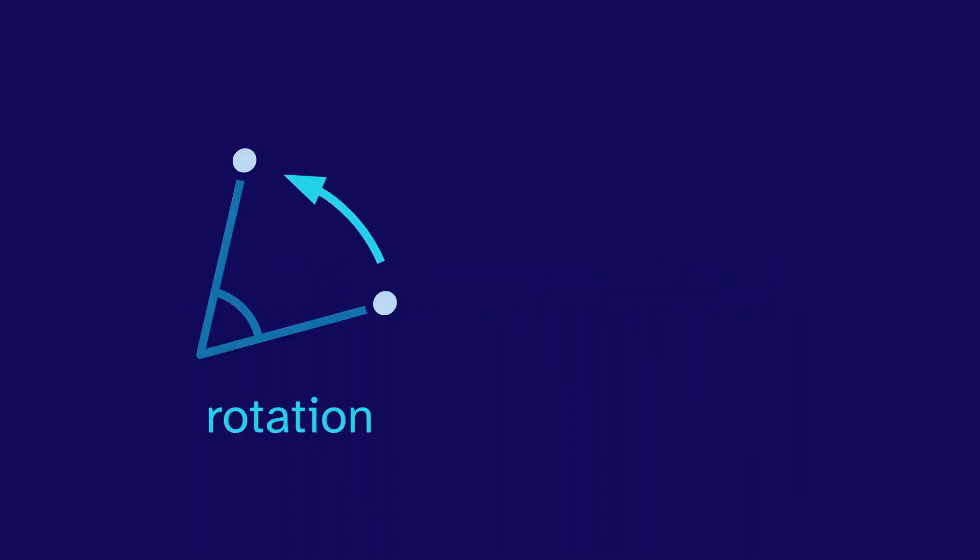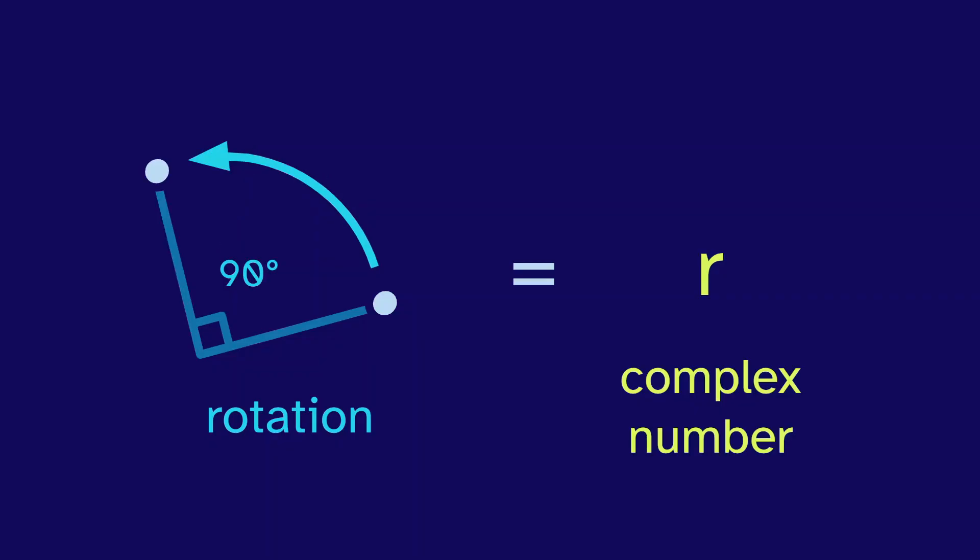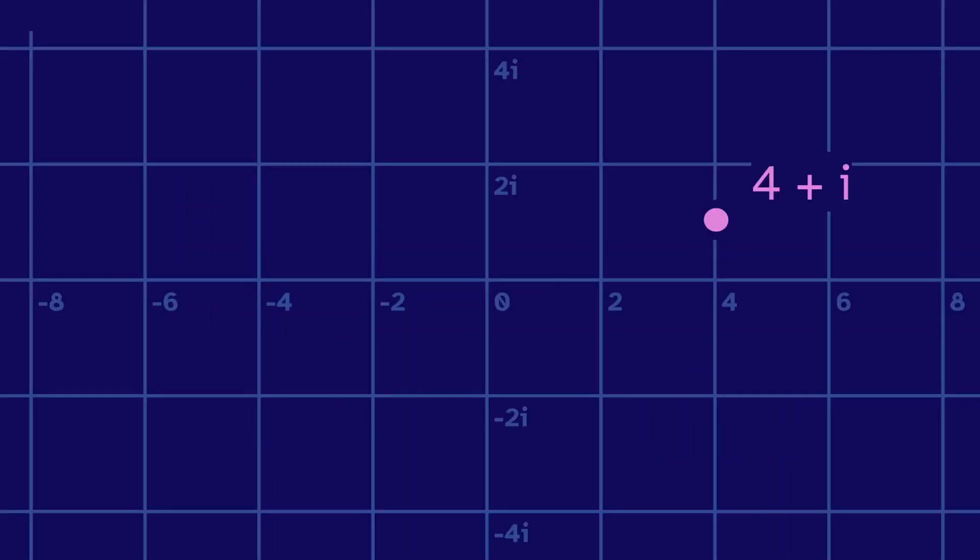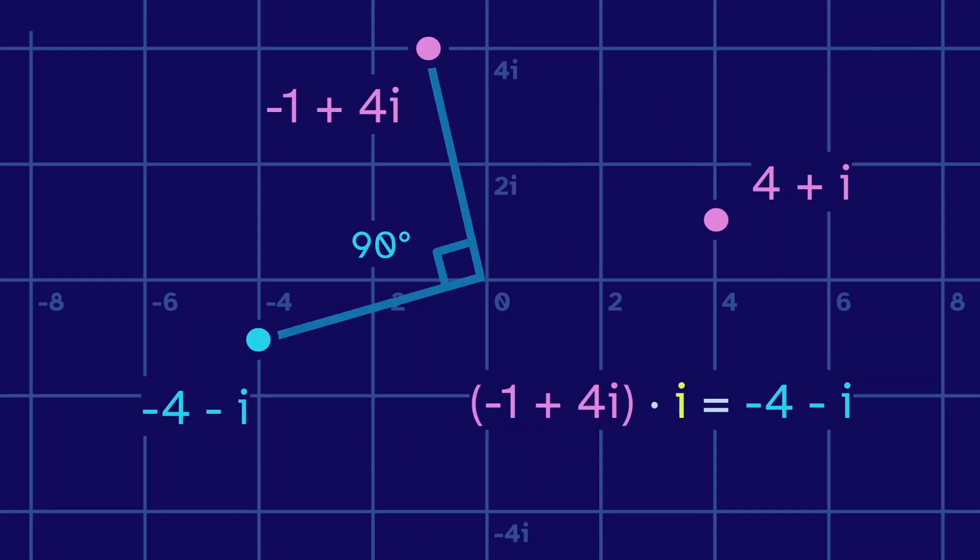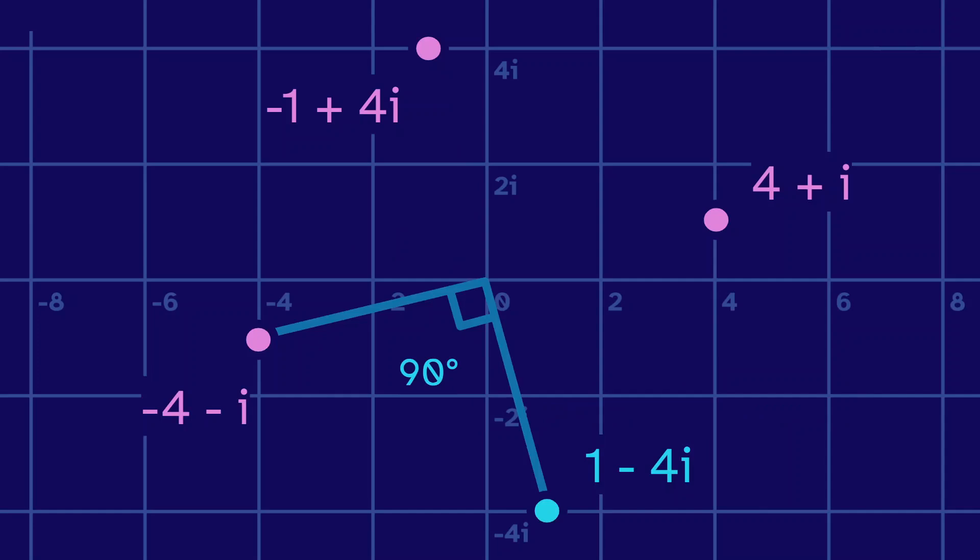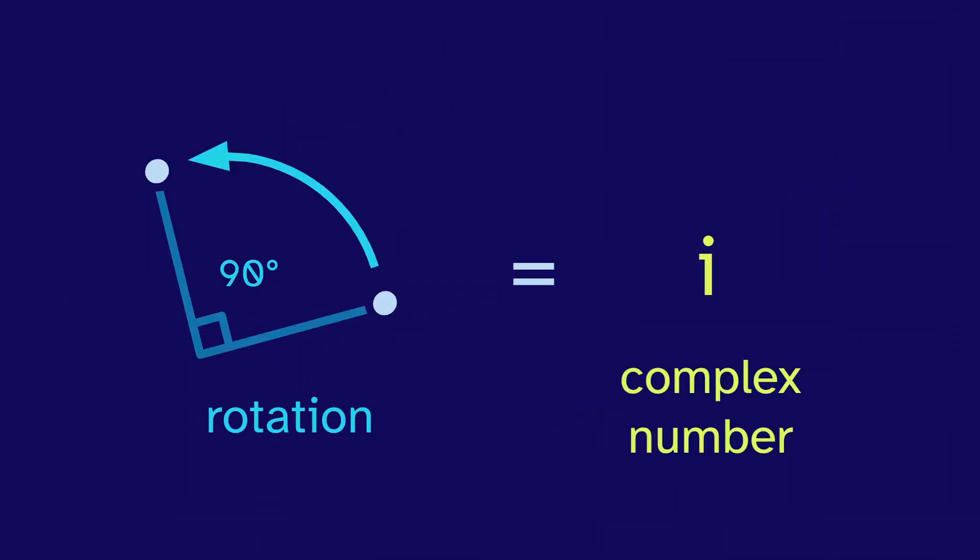Any rotation can be represented as a complex number. A great example of this is the 90 degree rotation represented by i. To see how this works, let's begin with 4 plus i. If we multiply by i, we get negative 1 plus 4i, which is 90 degrees from where we started. Multiplying again rotates further by 90 degrees, and then again, and then we get back to the start. So, i is a 90 degree rotation.